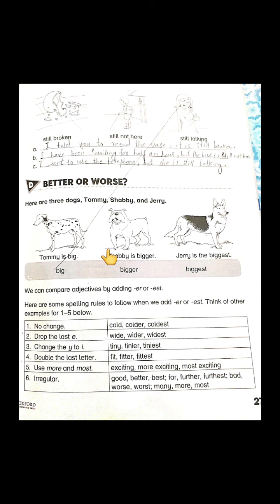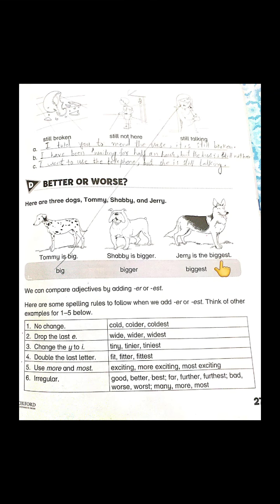Superlative adjectives are used to compare three or more nouns. They are also used to compare one thing against the rest of the group. For example, in the third case, Jerry is the biggest — this is the superlative adjective. Tommy is big, Shabby is bigger, and Jerry is the biggest, so Jerry is the noun being compared with Shabby and Tommy. Here we have used the superlative degree.